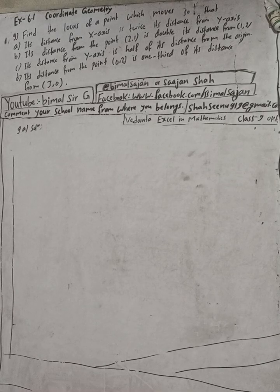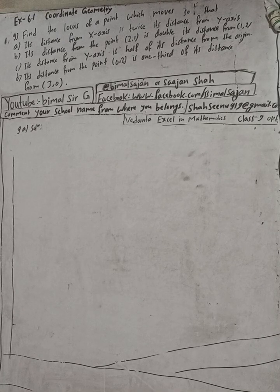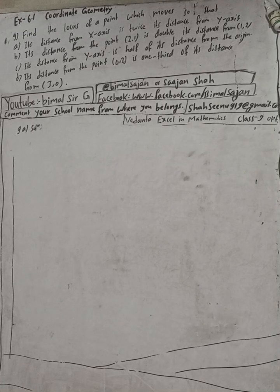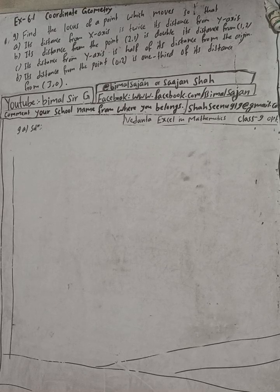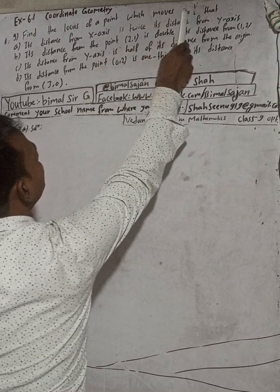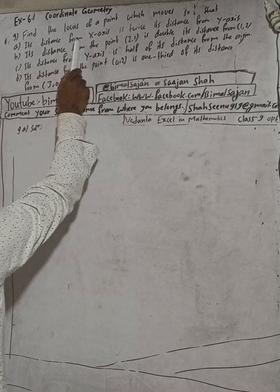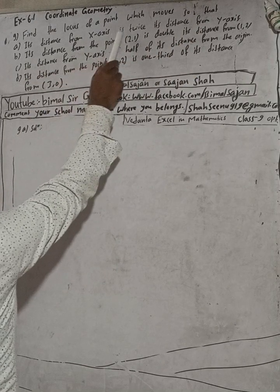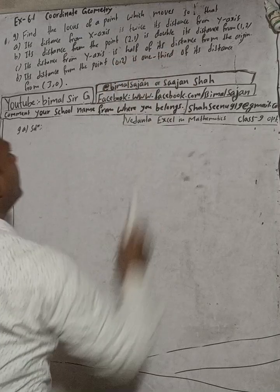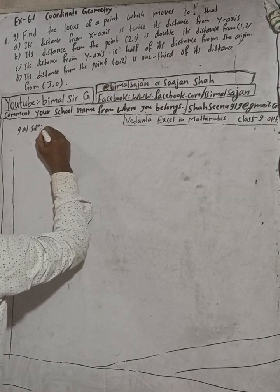Hi class 9 and 10 students, welcome back to Bimal Sir's YouTube channel. This is question number 9a, exercise 6.1, coordinate geometry, class 9 optional mathematics. The question is: find the locus of a point which moves so that its distance from the x-axis is twice its distance from the y-axis.